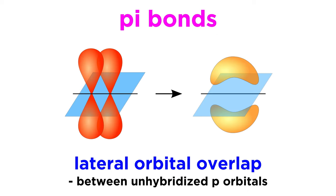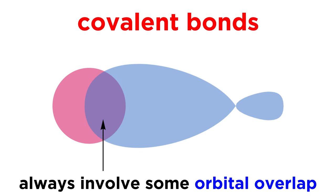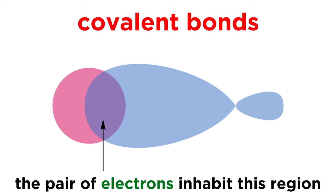Pi bonds, on the other hand, involve lateral orbital overlap between unhybridized p orbitals. But no matter what the case, for any covalent bond, there is some kind of orbital overlap, and the pair of electrons will inhabit the overlapping region.